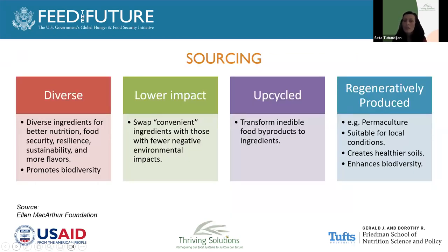Sourcing is the third pillar. In sourcing, we look at how do we source ingredients that are diverse and produced in a diverse manner — not in industrial farming — and also diversify the ingredients we're consuming, which is better for our health. We look at sourcing material with a lower impact, transforming inedible food byproducts or food waste into ingredients through upcycling, and sourcing material that has been regeneratively produced.